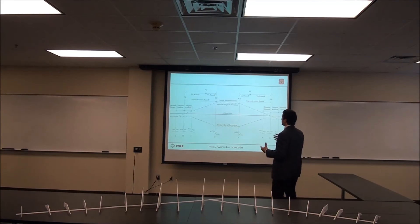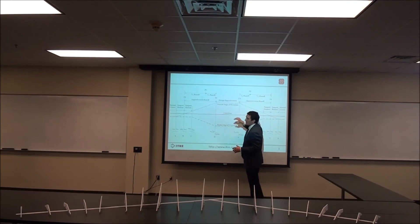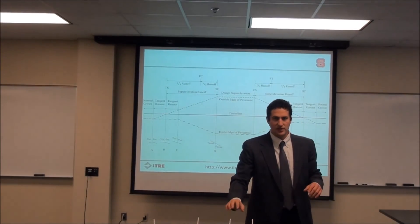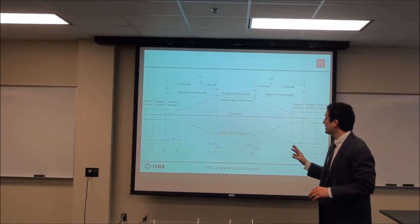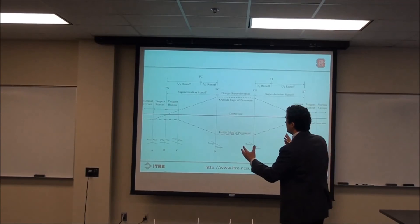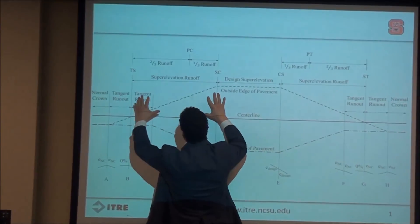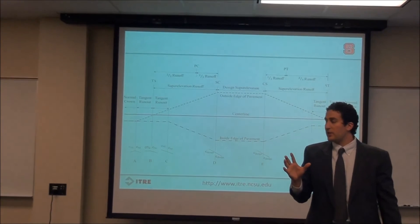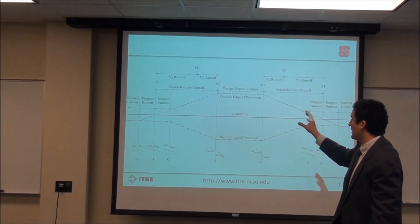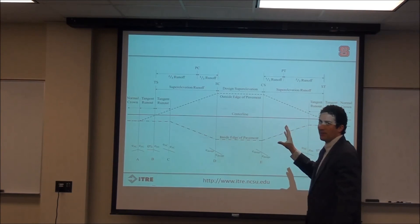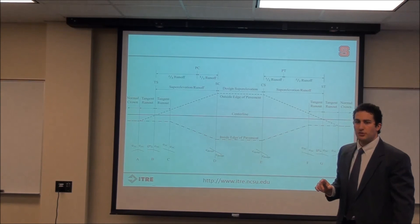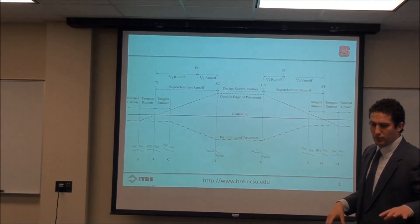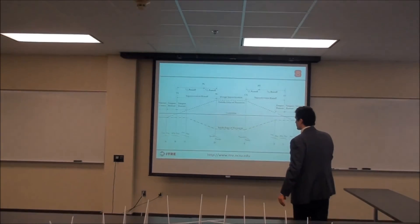Even with a simple curve — just a PC and PT — you still need to accomplish the rotation from normal crown to design superelevation. One alternative is to split the superelevation runoff, which is the spiral transition length between the TS and SC. That runoff still needs to be accomplished, and a common method is to distribute two-thirds of the runoff before the PC and one-third after the PC. That completes this discussion about the relationship between cross slopes and horizontal curvature.